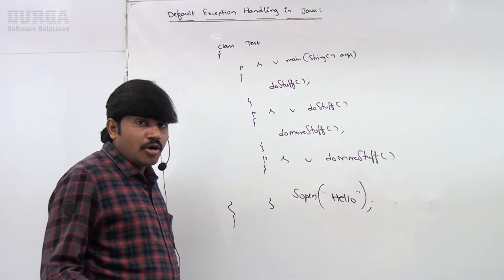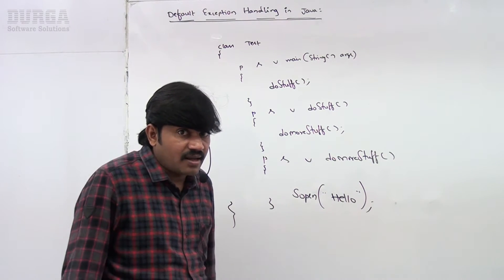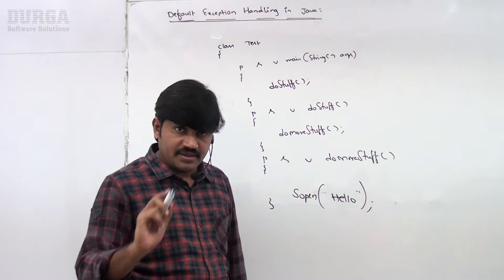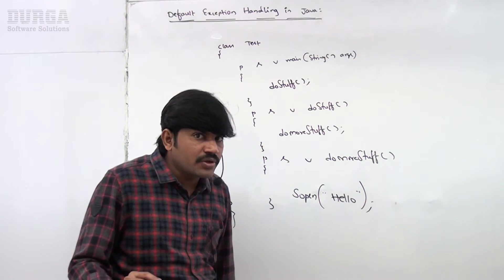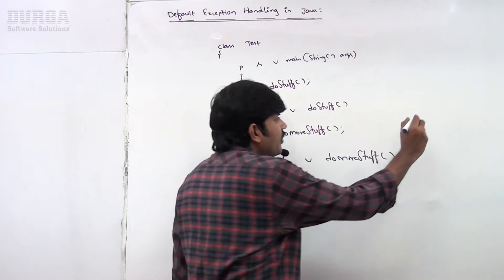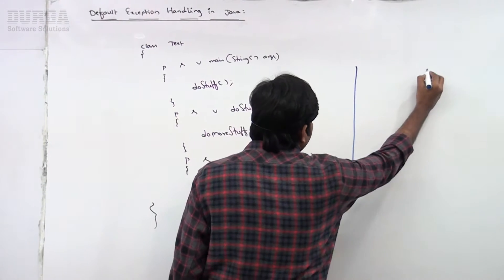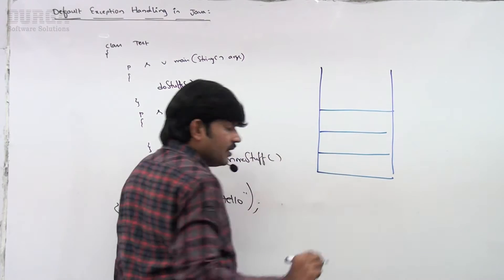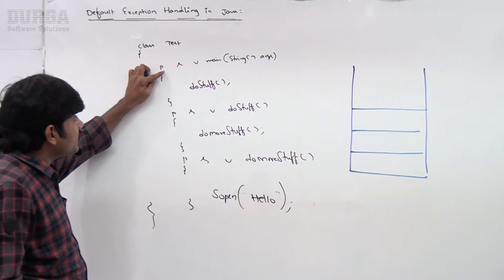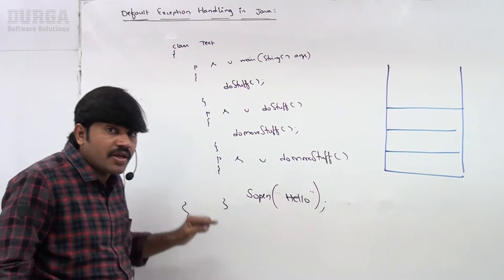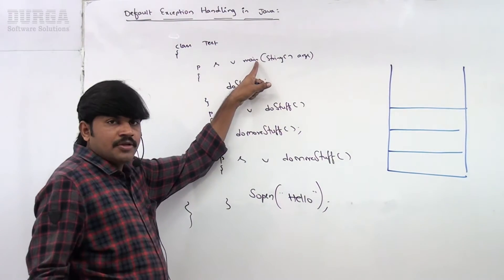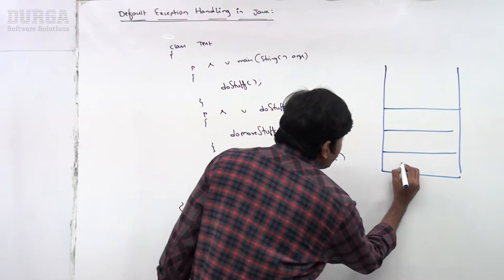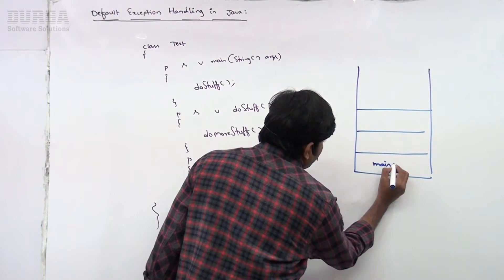Now, in this program, how many threads are available? I already covered this in the last video on runtime stack mechanism. There is only one thread — the main thread. For every thread, JVM is going to create one runtime stack.